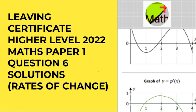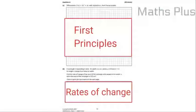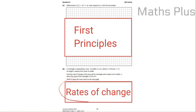Hello and a very warm welcome back to Maths Plus. We are continuing with the higher level 2022 maths paper 1. We're on to question 6 now and it covers rates of change, so we're still on differentiation. Let's have a look at the first question: differentiate f(x) = 2x² + 4x with respect to x. We have to use the first principles formula here. Part b requires the rate of change formula, so we're going to differentiate a function of area and put in a value to get the rate of change.